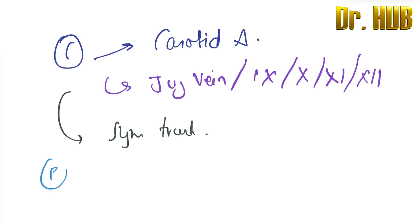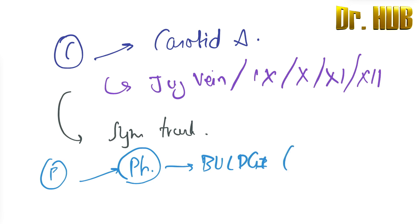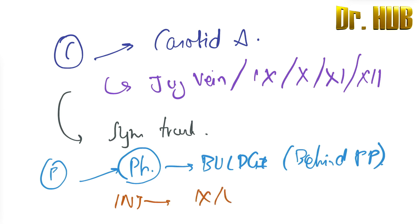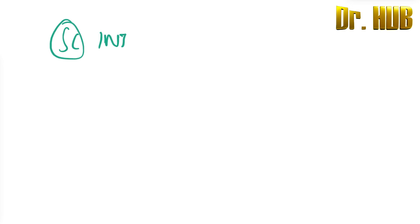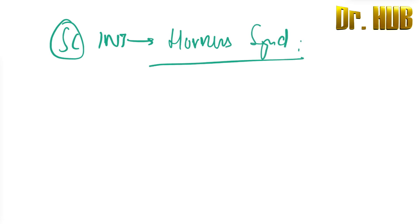The presentation of post-styloid involvement includes bulging of the pharynx behind the posterior pillar. There can be injury to the 9th, 10th, 11th, and 12th cranial nerves, leading to vocal cord paralysis. Sympathetic chain injury leads to Horner's syndrome, and there may also be swelling of the parotid region.